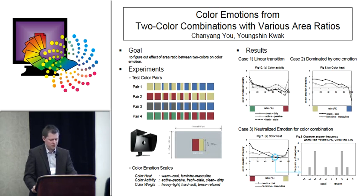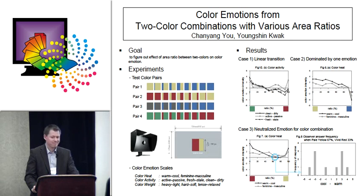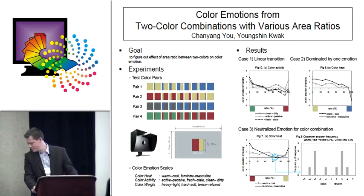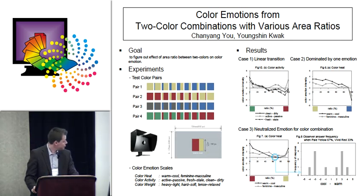As you can see in this graph, two opposite color emotions — one color covers most of the area at this pattern — but observers still feel warm. Another pattern shows that total color emotion is neutralized when two colors meet.